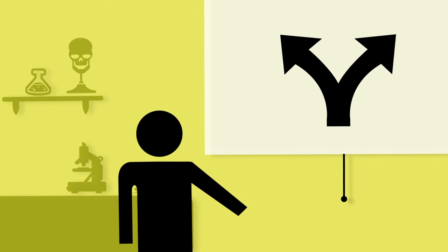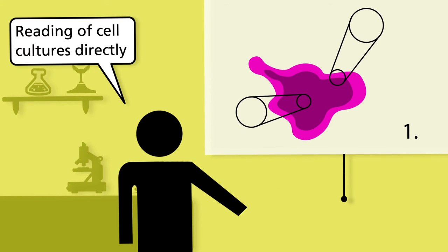The counting is achieved by one of two ways. The first one is to read the cell culture directly.